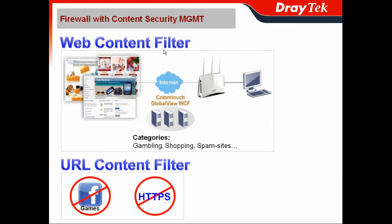First, web content filter. The Vigor 2130 series can adopt the Comtouch GlobalView web content filter, which provides pre-categorized filtering for different web access types like gambling, shopping, and spam sites. You can save your time to block access to these kinds of websites — either for parental control on your own network, or to enhance productivity if you've adopted the 2130 series for your SOHO business.